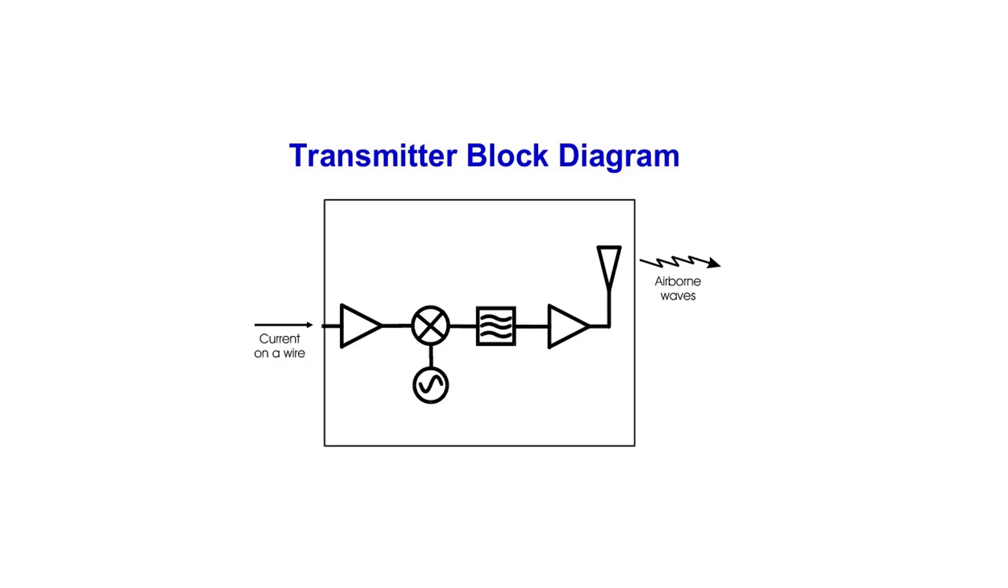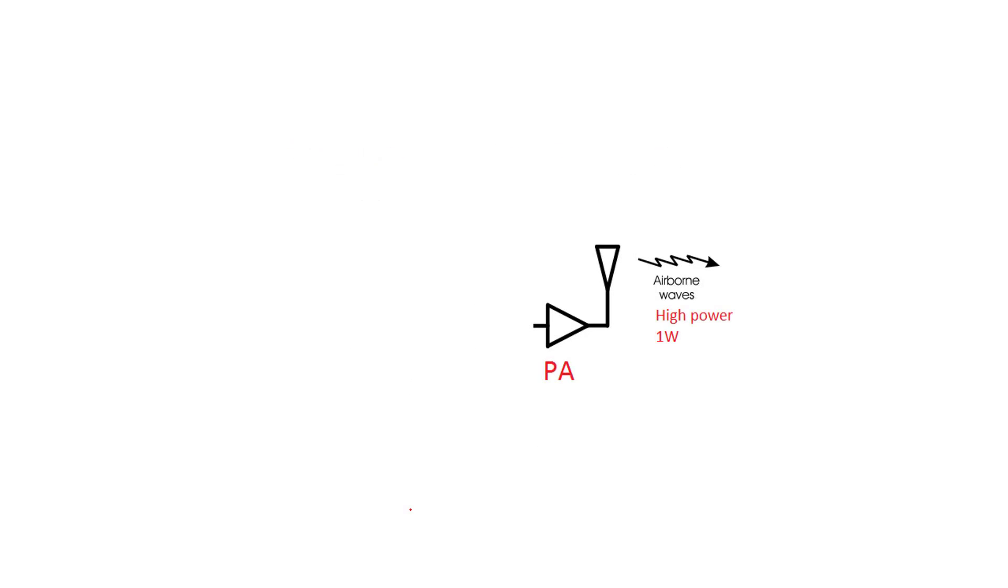This is the block diagram of the transmitter, and we have lots of blocks, like oscillator, mixer, as we talked before, filter. But now, we are not going to talk about that. The last block of the transmitter is our power amplifier, which is connected to our antenna.